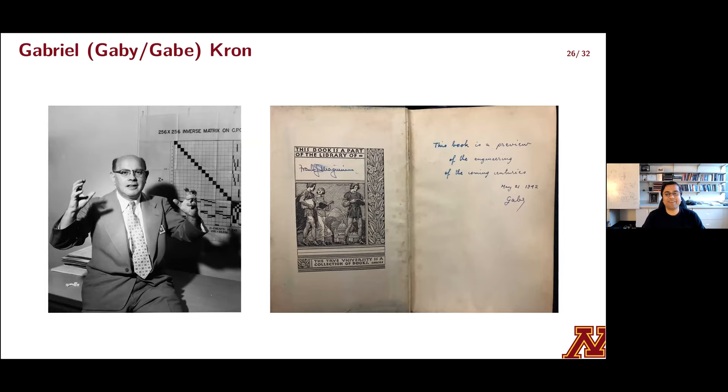Krone was definitely sure of himself. Signing off as Gabby or Gabe in a textbook in 1942 that eventually found its way to me via Bruce Wallenberg. Krone says in no uncertain terms that he's providing a preview of engineering of the coming centuries. I guess he was right. Here we are talking about Krone reduction in 2021. So to establish notation and background, what I'm going to do is consider a network with capital E edges. These are all going to be RL circuits. And the topology is going to be captured by this incidence matrix capital A.